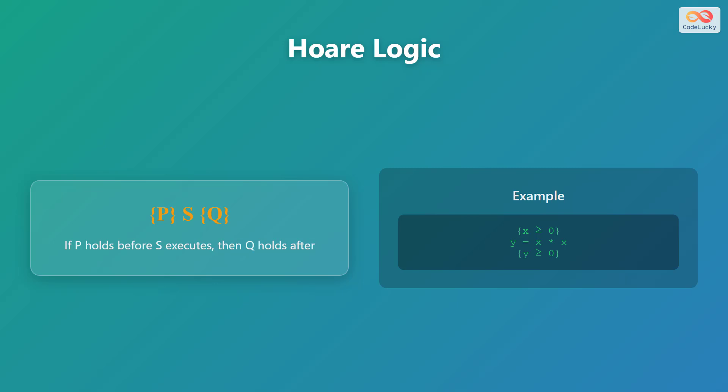For example, if X is greater than or equal to 0, then after executing Y equals X times X, Y will be greater than or equal to 0.